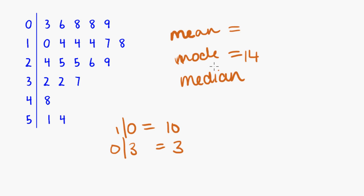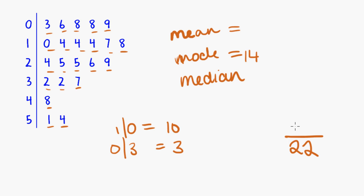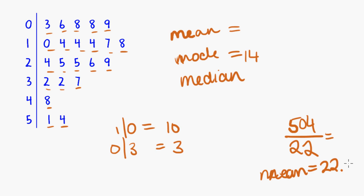Now let's look at the mean. We add up all the data points and divide by how many there are. There are 22 total data points. Adding them all up — 3 plus 6 plus 8 plus 8 plus 9 plus 10 plus 14 plus 14 and so on — gives us 504. Dividing 504 by 22 gives us a mean of 22.91, rounding to two decimal places.